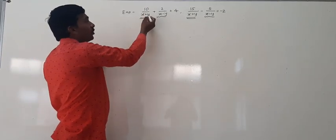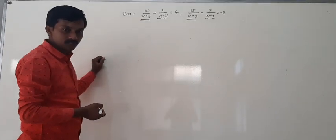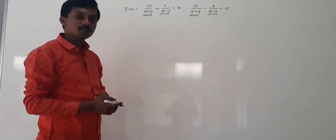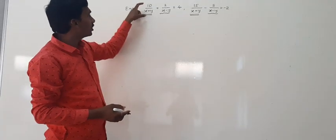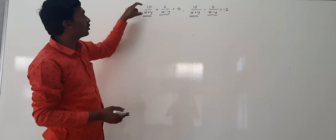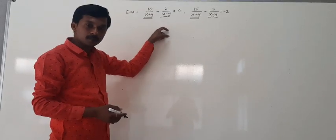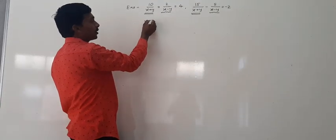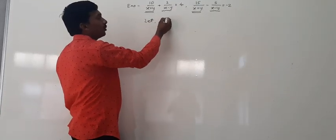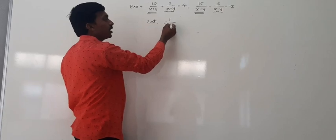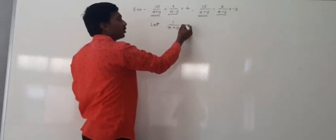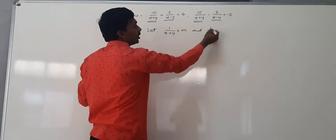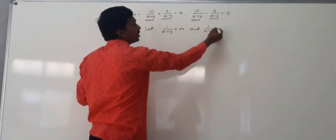Since the parameters are the same, we can use substitution. Let 1 upon (x plus y) be equal to m, and 1 upon (x minus y) be equal to n. So we substitute: 1 upon (x plus y) is m, and 1 upon (x minus y) is n.